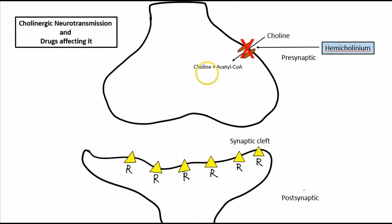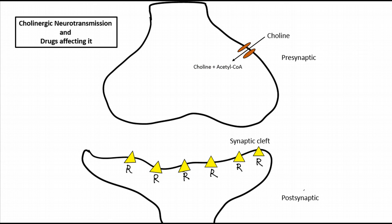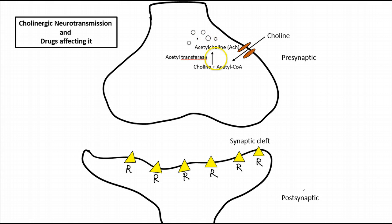Once choline enters the presynaptic neuron, it binds with acetyl-CoA. With the help of a very important enzyme called acetyltransferase, it is converted to acetylcholine, which completes the synthesis of acetylcholine.